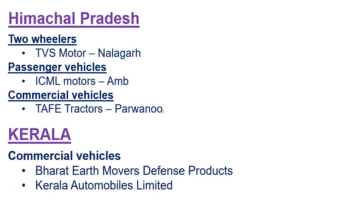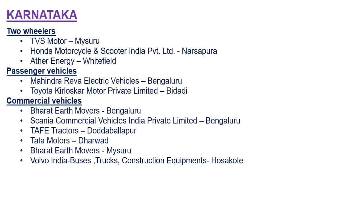In Kerala, the commercial vehicle section includes Bharat Earth Movers defense products and Kerala Automobile Limited. In Karnataka, the two-wheeler section has TVS Motor at Mysuru, Kinetic Motor Corporation, and Scooters India Private Limited at Narsapura. The passenger vehicle section has Mahindra REVA Electric Vehicle at Bengaluru, and Toyota Kirloskar Motor Private Limited at Bidadi. The commercial vehicle section includes Bharat Earth Movers at Bengaluru, Scania Commercial Vehicles India at Bengaluru, TAFE Tractors at Doddaballapur, Tata Motors at Dharwad, Bharat Earth Movers at Mysuru, and Volvo India (buses, trucks, construction equipment) at Hosakote.